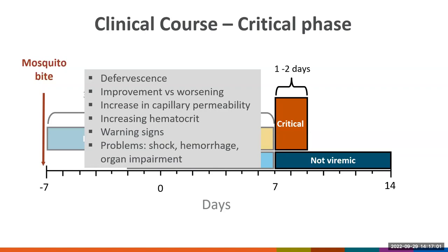But some patients will enter the critical phase, which starts with defervescence, lasts 1 to 2 days, and is characterized by an increase in capillary permeability. It is when extravasation of fluid into the interstitial space, or plasma leakage, usually occurs. Some patients might progress to this phase without abatement of fever. This phase can be identified by an increase in hematocrit or hemoconcentration, because there is plasma leakage but the red blood cells are too large to pass into the interstitial space. Warning signs occur in this phase, and the most common clinical problems correspond to progression to severe manifestations of the disease.